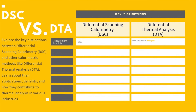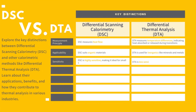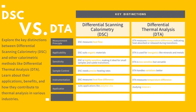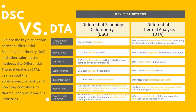In the realm of thermal analysis, Differential Scanning Calorimetry (DSC) and Differential Thermal Analysis (DTA) play indispensable roles in unraveling the mysteries of material behavior under changing temperatures. While DSC focuses on quantifying heat flow, DTA hones in on temperature differences. Their distinct applications, sensitivities, and benefits make them essential tools in diverse industries, each contributing uniquely to the world of thermal analysis.